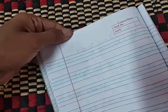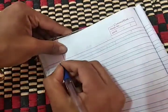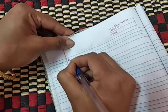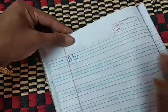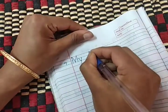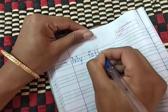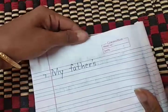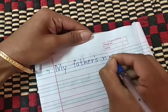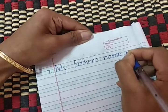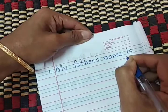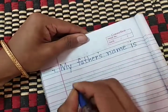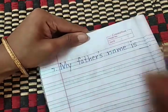The seventh sentence is your father's name. Write M capital, Y small — 'my' — give a space, then F-A-T-H-E-R apostrophe S — 'father's' — give a finger space, then I-S, give a space, then N-A-M-E. My father's name is dash. Write your father's name and give a full stop.